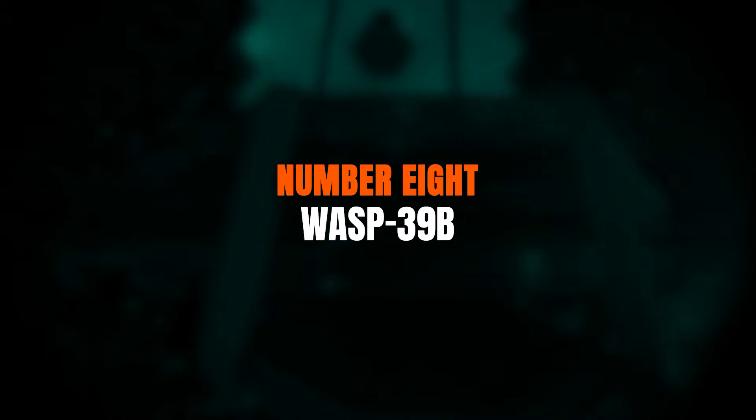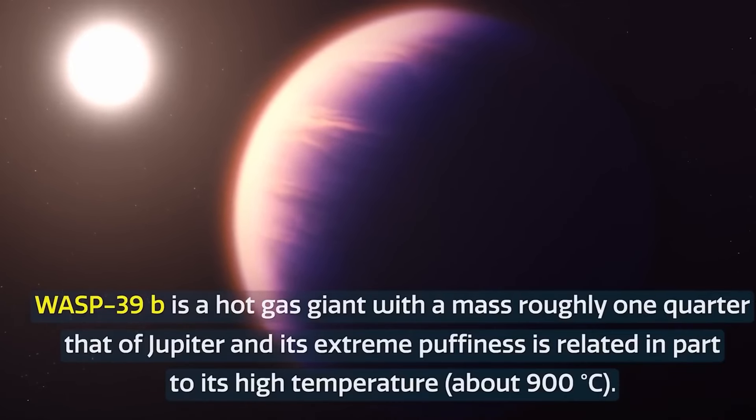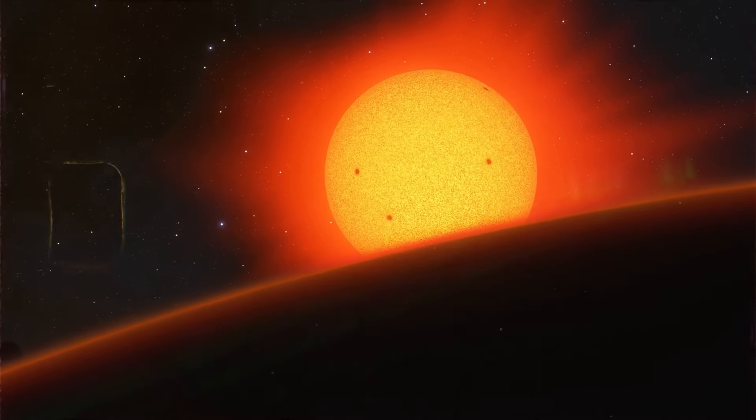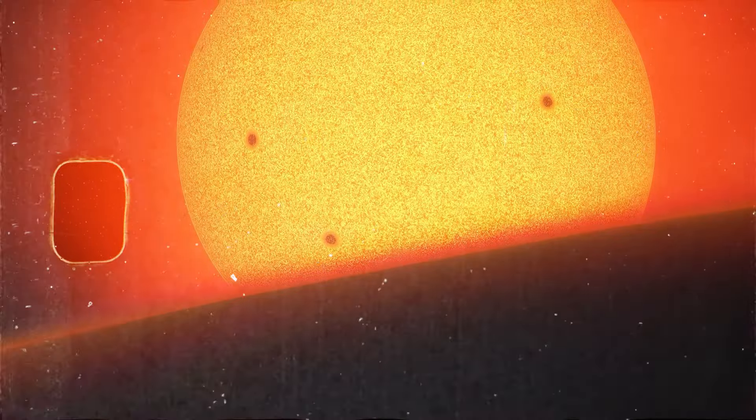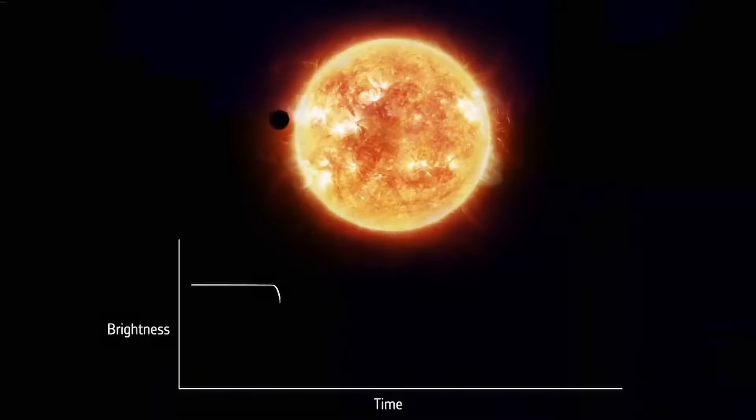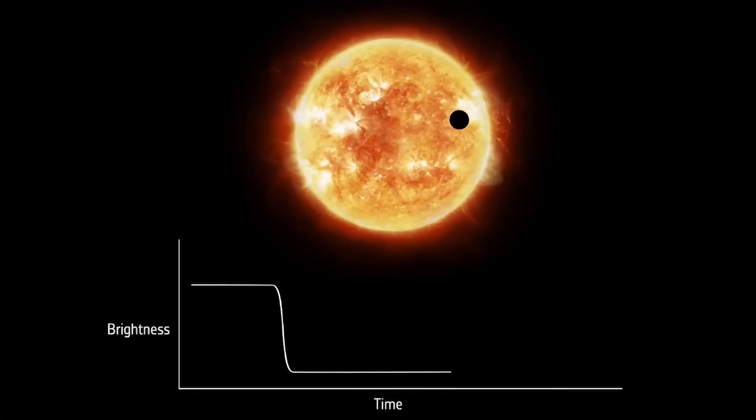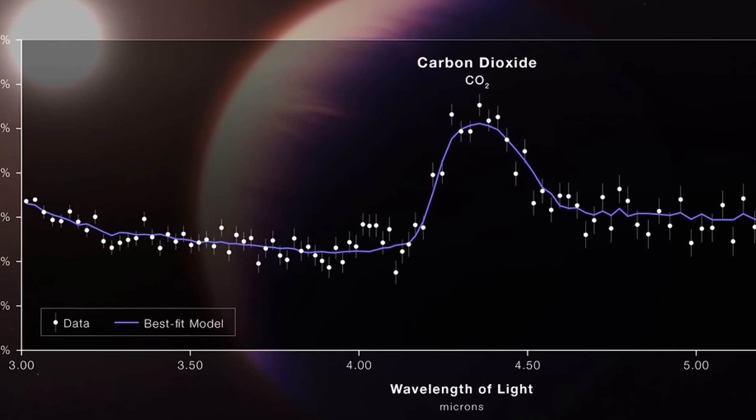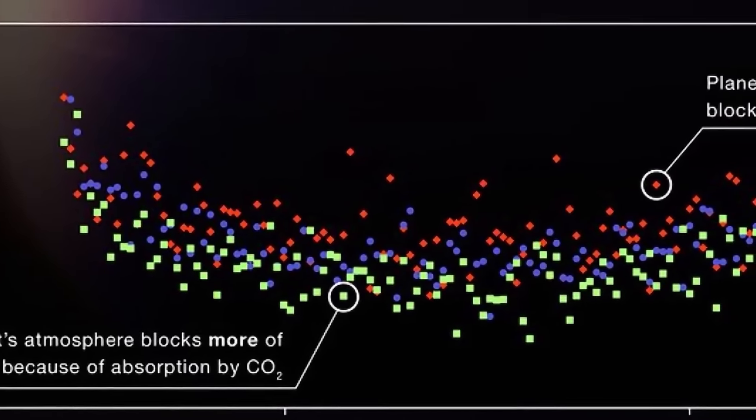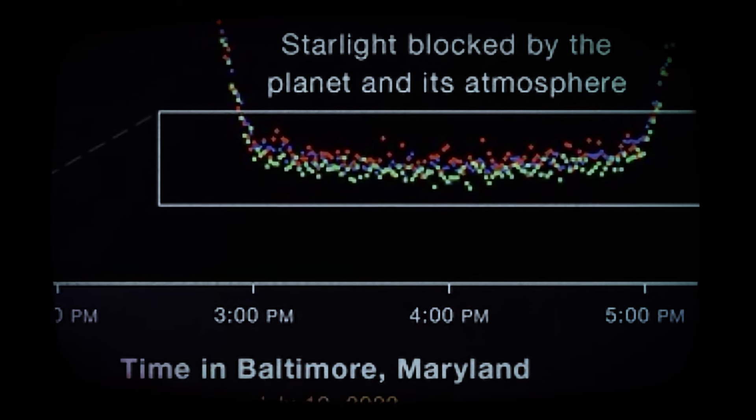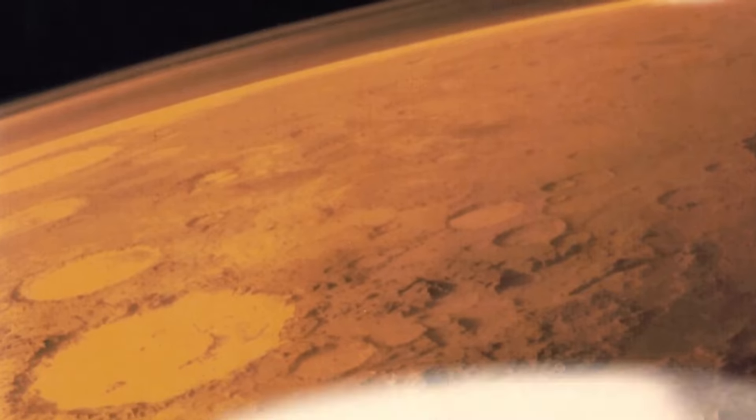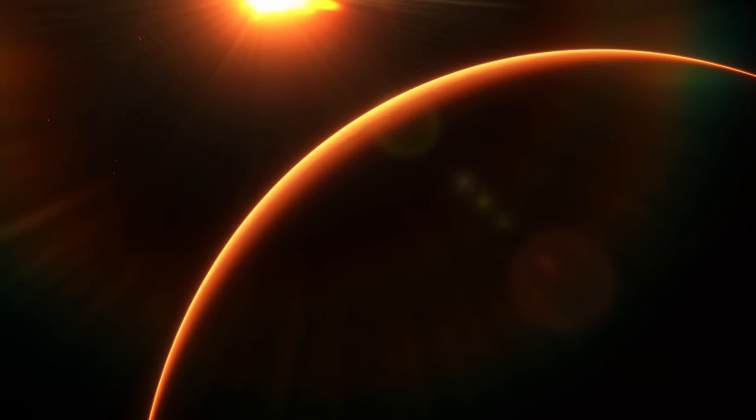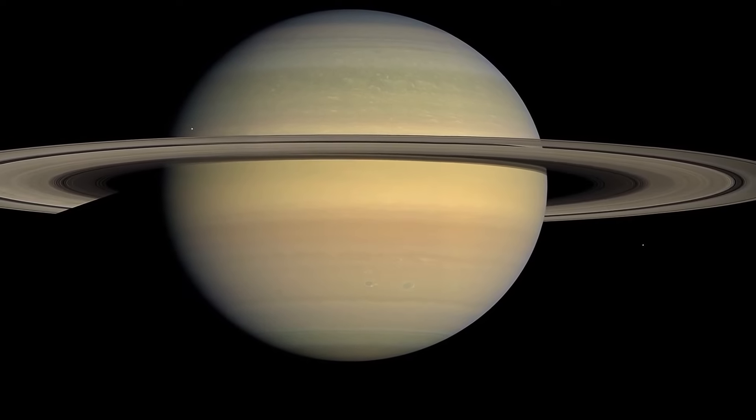Number 8. WASP-39b. Meet WASP-39b, a boiling gas giant about the size of Saturn located around 700 light-years from Earth. This planet orbits its host star at an insanely close distance, about eight times closer than Mercury is to our Sun. Using Webb's main camera and two of its spectrographs, scientists were able to make some groundbreaking discoveries. They identified carbon dioxide in WASP-39b's atmosphere, marking the first time this gas has ever been found in an exoplanet's atmosphere. But that's not all. The planet's thick atmosphere is also dominated by clouds containing sulfur and silicates, including sulfur dioxide.